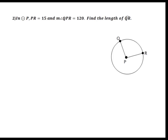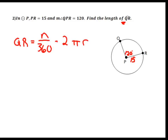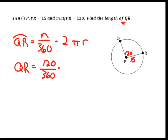Problem two: in circle P, PR is 15 and the measure of angle QPR is 120 degrees. We want to find the length of QR. Since there's no M notation, this is an arc length problem. Using the arc length formula — degrees over 360 times circumference — QR equals 120 over 360 times 2 times pi times 15. The length of QR is approximately 31.4.